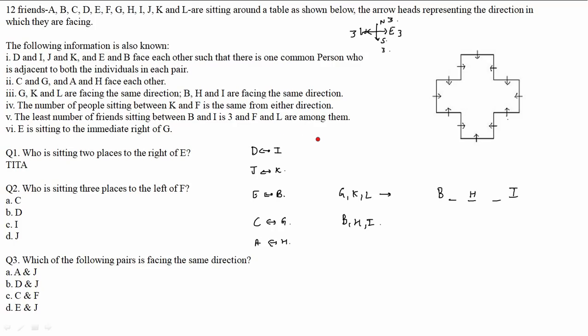The last point: E is sitting to the immediate right of G. This gives us a specific condition we can use right now. We will form cases from this and then be able to proceed.